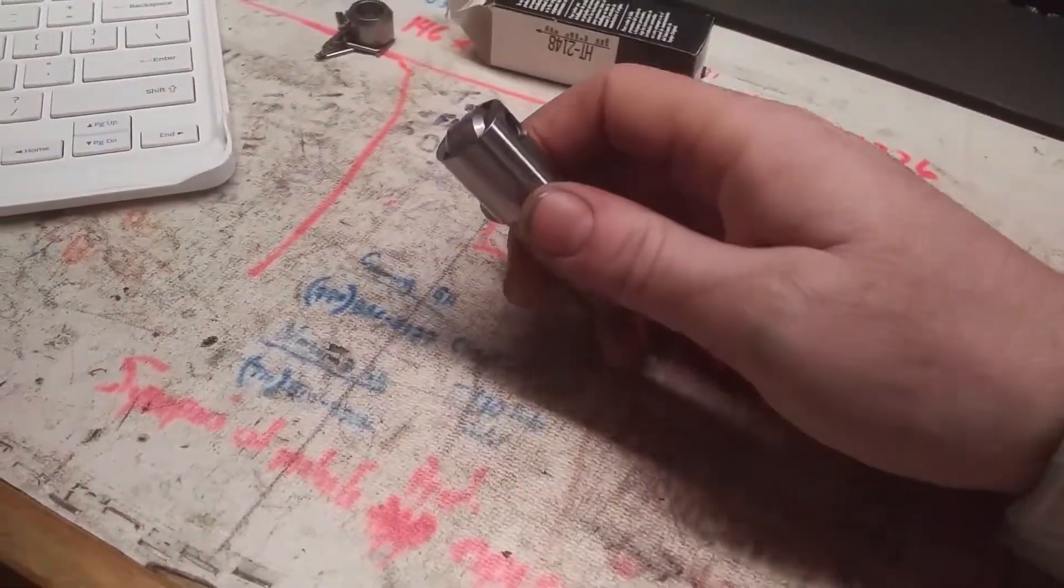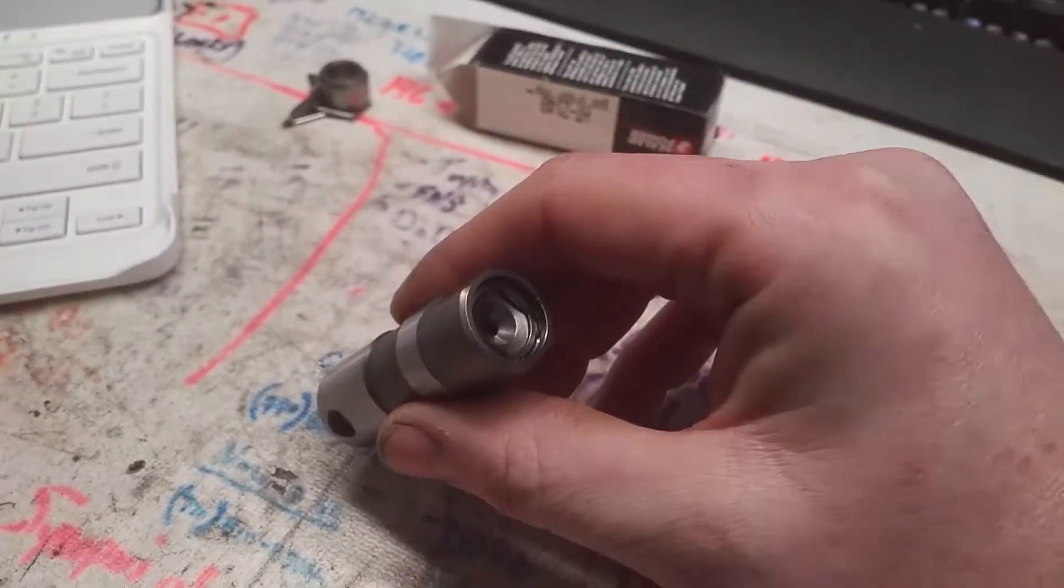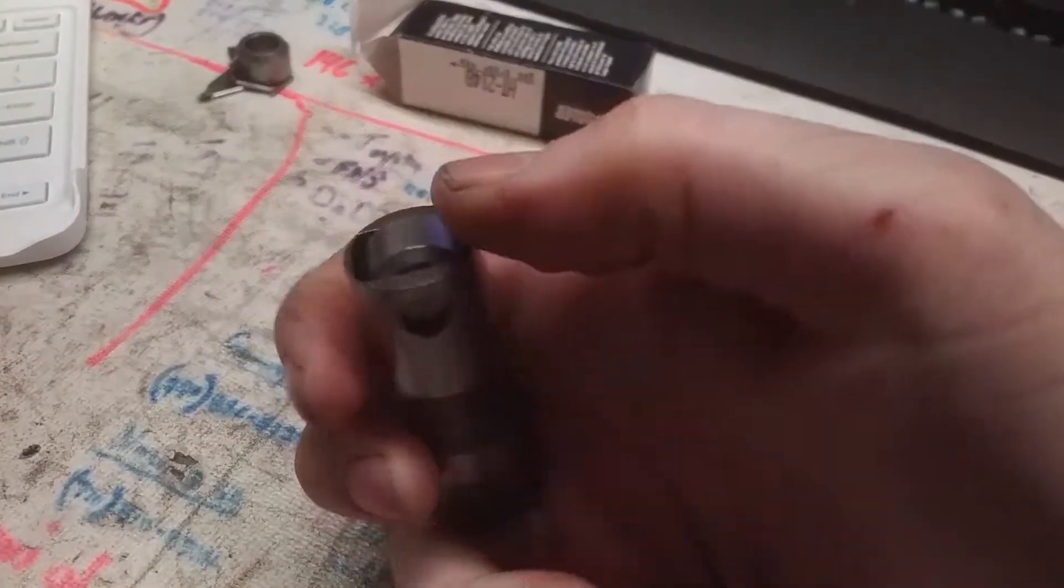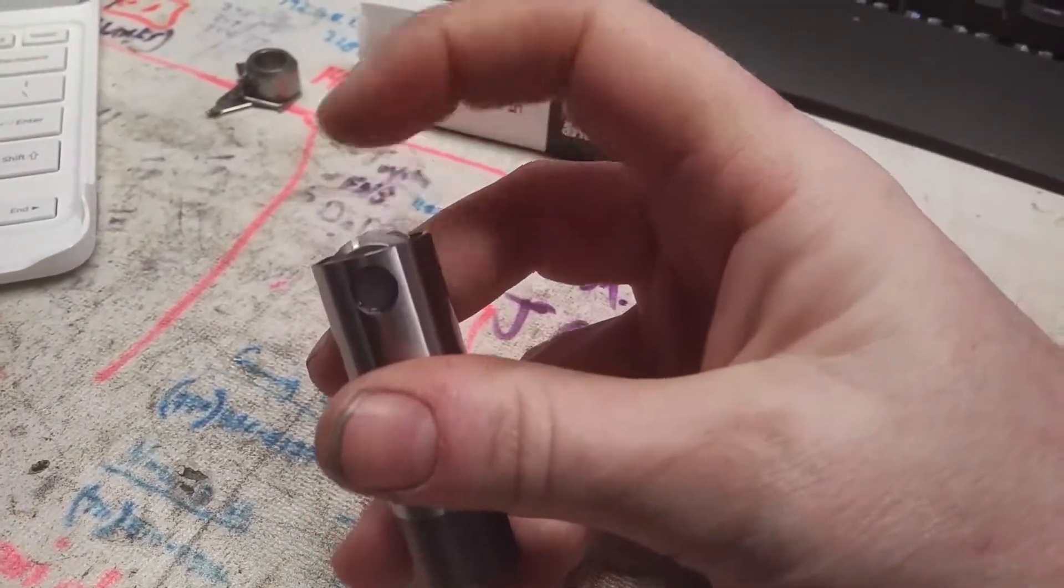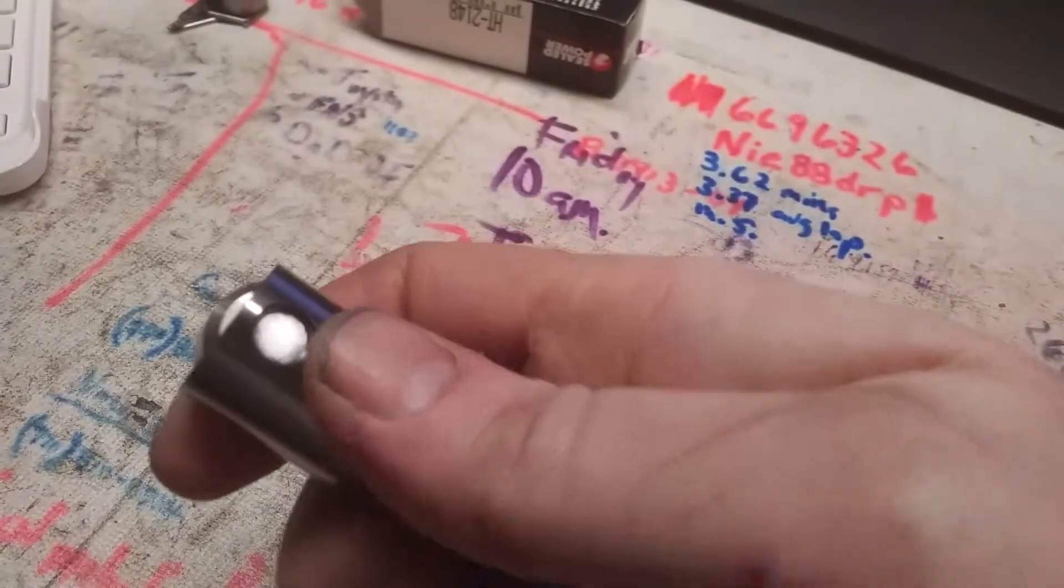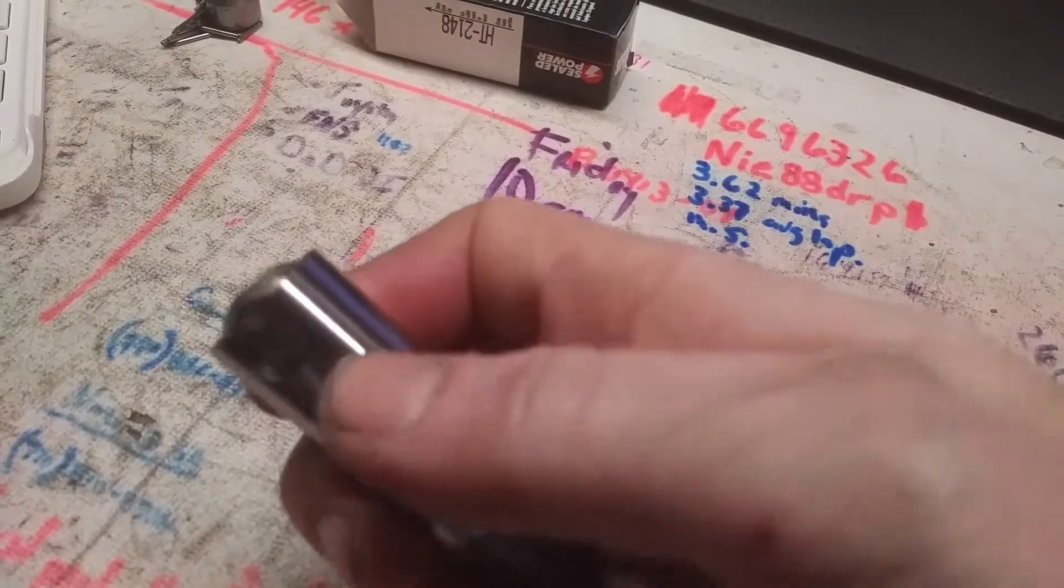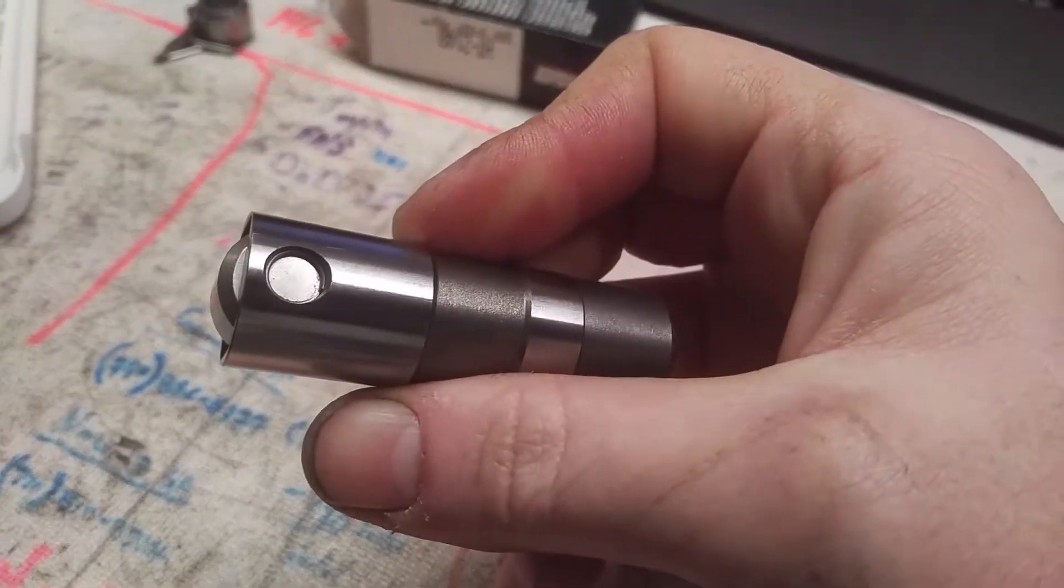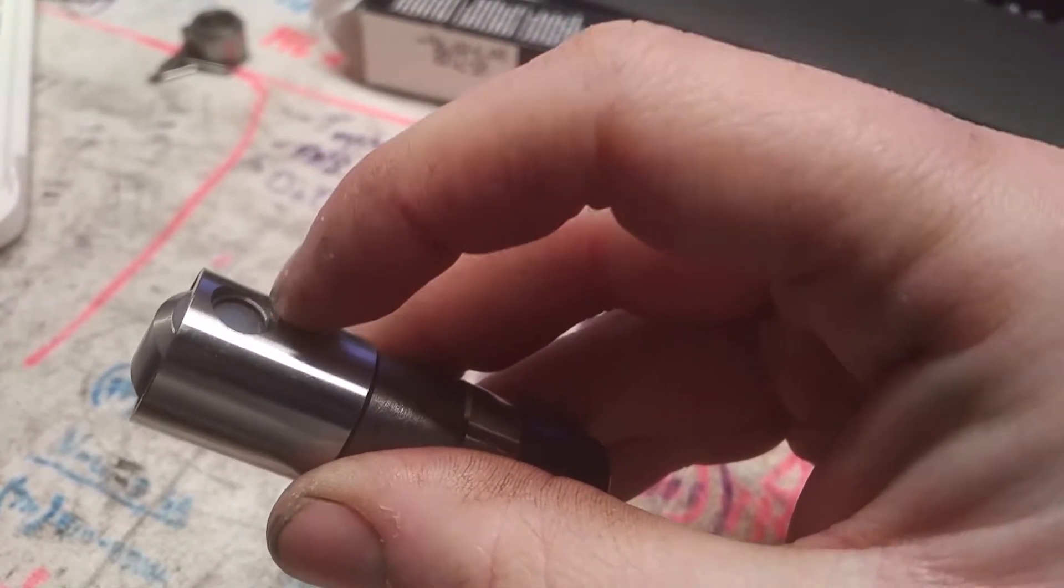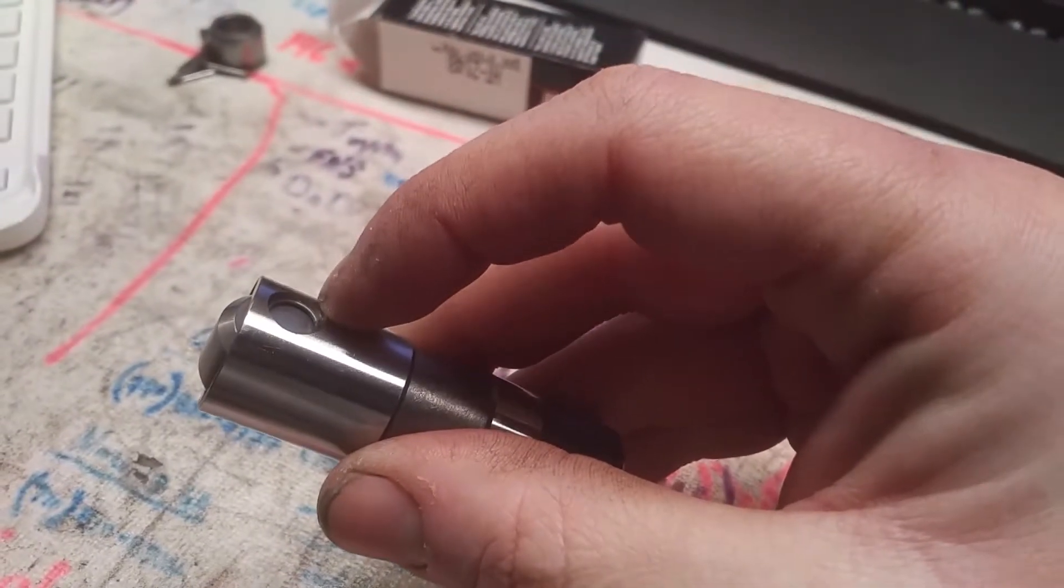Right here we have the actual lifter, which goes down in the engine this side first. This side has the roller on it, and that roller is held in by a tightly fit rod that goes on both sides. That rod is held in place by what are essentially snap rings.